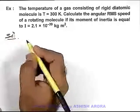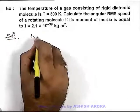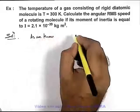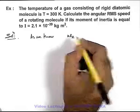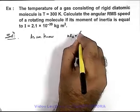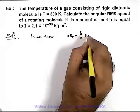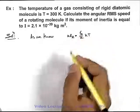So here in solution we can start as we know the kinetic energy of rotation for a gas molecule can be written as fr/2 kT, where fr are the rotational degrees of freedom.